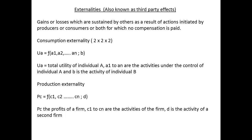We now come to a definition of externalities. These are the gains and losses that are sustained by others as a result of actions initiated by producers or consumers, or both, for which no compensation is paid. Consider a model with two factors, two goods and two individuals. The total utility for individual A is given by UA and is a function of all the activities directly under the control of A and the activity of individual B. The production externality is written as PC, representing the profits of firm C, which depend upon the N activities of firm C and the activity D of a second firm.